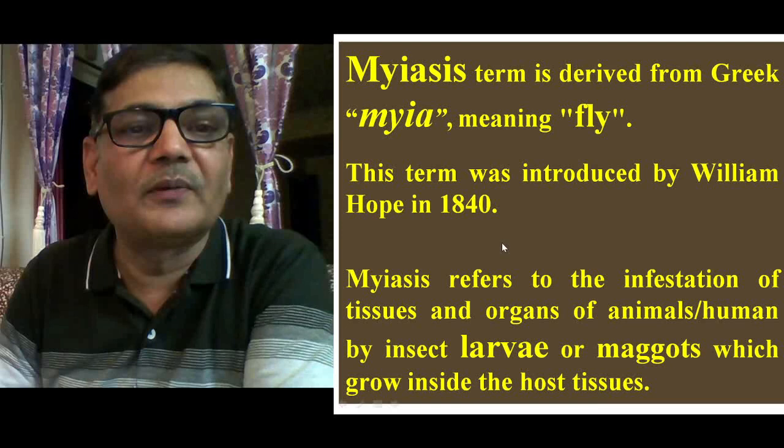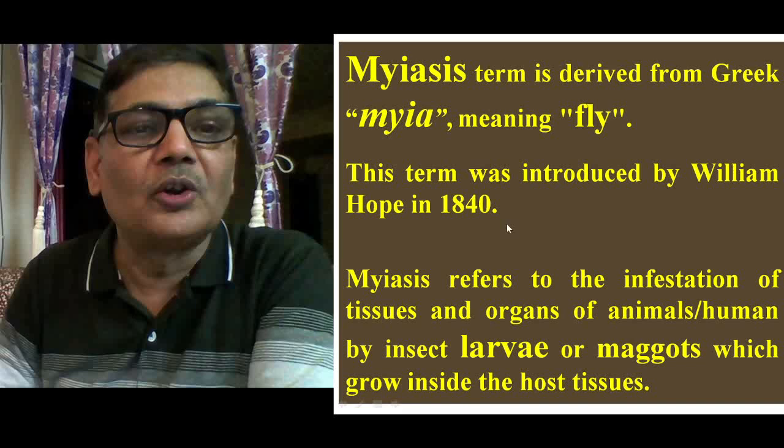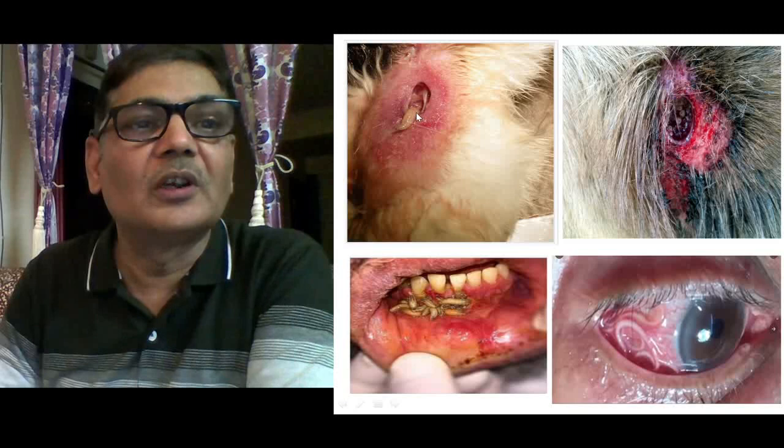If someone is suffering from a wound, flies may be sitting over such wounds. They would be laying eggs inside the wound and from those eggs larvae will come out. These larvae then grow inside the wounds, which becomes a serious situation and must be very carefully dealt with.